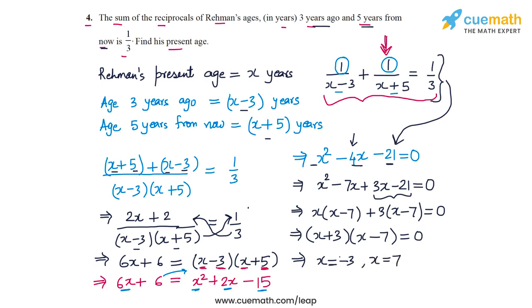Which of the two roots should we pick? Since x is Rehman's present age, it must be a positive number. So the root x = -3 is not valid in this case, and the correct root is x = 7. This means Rehman's present age is 7 years.